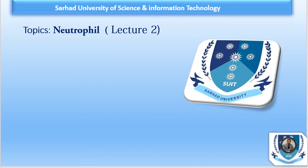Assalamualaikum and Bismillahirrahmanirrahim. We are here with lecture number two of neutrophil. In the first lecture we discussed the structure of neutrophil and classification of WBCs, the different types of classification, how granules are formed — primary granules and secondary granules — pinched off from the Golgi apparatus, and which enzymes they contain like myeloperoxidase, acid hydrolase, or lysosomes.